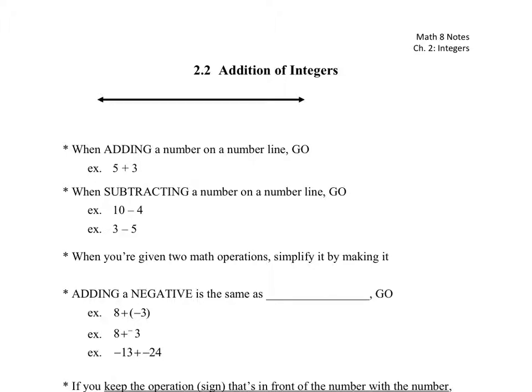Integers are going to be numbers that don't have decimals, so 1, 2, 3, 4, 5, 6, 7, 8, and so on, but also negatives, negative 1, negative 2, negative 3, negative 4, and that way.